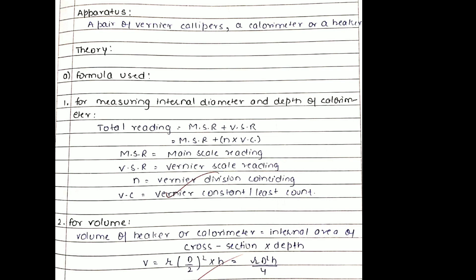Here MSR, n, and VC are the main scale reading, vernier scale reading, and the vernier division coinciding, and the vernier caliper constant. I've explained in detail about all these things in the previous video, so please watch that video also.